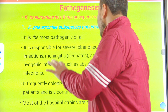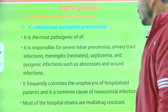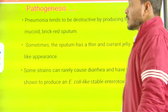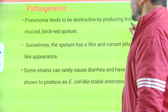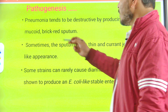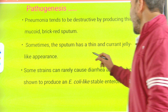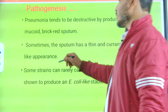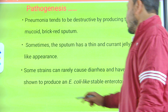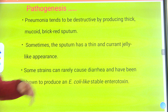Klebsiella pneumoniae frequently colonizes the oropharynx of hospitalized patients and is a common cause of nosocomial infections. Most hospital strains are multi-drug resistant. The pneumonia tends to be destructive, producing thick mucoid brick-red sputum. Sometimes the sputum has a thin currant-jelly-like appearance. Rarely, some strains can cause diarrhea and produce E. coli-like heat-stable enterotoxin.